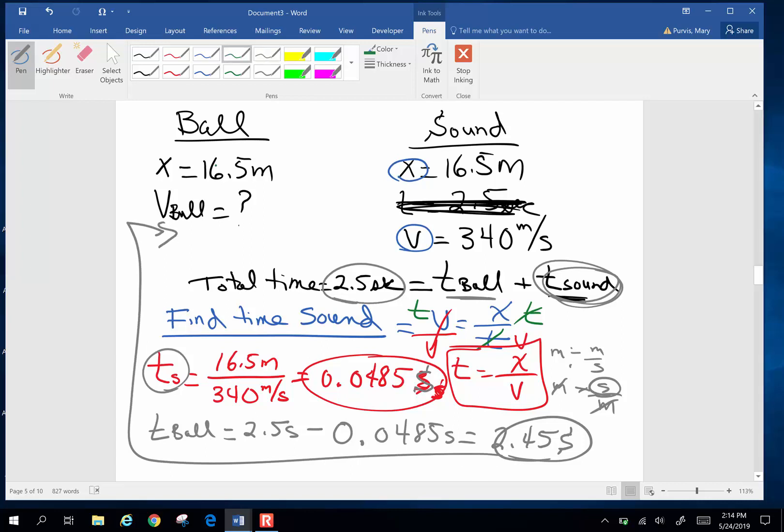And if I know the time for the ball, I can now find the velocity of the ball. So velocity of the ball is going to be distance divided by time. And that is going to be 16.5 meters. The time for the ball is 2.45 seconds. And when I pick up my calculator, 16.5 divided by 2.45, and I get 6.73 meters per second is the velocity of that bowling ball.